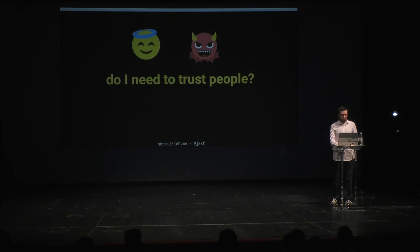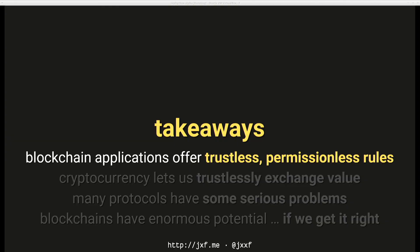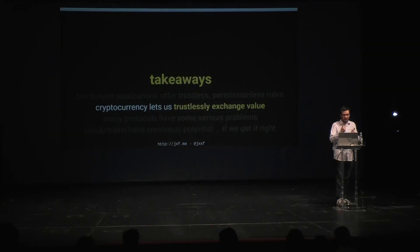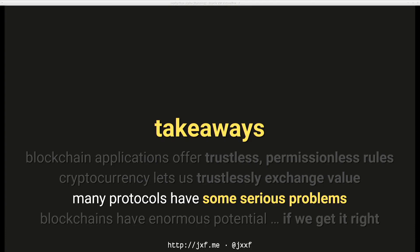Do you need to trust other people? If you don't, you don't necessarily need a blockchain. So I want to leave you with four takeaways. First, blockchain applications are about trustless, permissionless rules. If you're building a blockchain application, it shouldn't require trust in some central location. Cryptocurrencies let us trustlessly exchange value and information — that's useful — but it may not be as useful as just having a database. Protocols have serious problems: waiting a long time for blocks, spending a lot of computational effort, and so on.